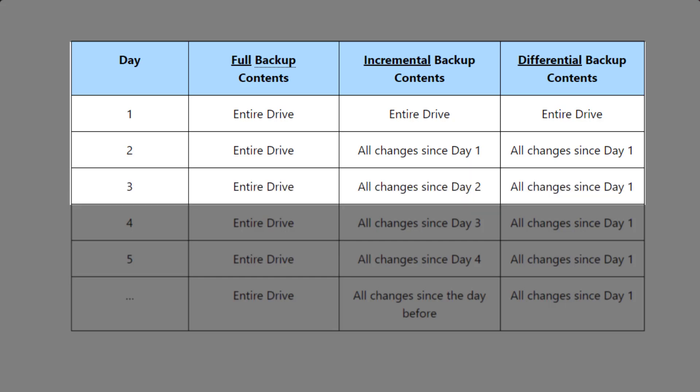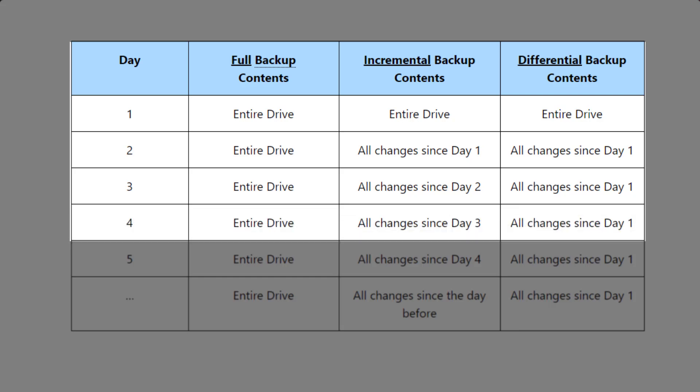Day three is where things start to get interesting. A full backup is always a backup of the entire drive. An incremental backup would contain only those things that have changed since the previous day — since day two. A differential backup will contain everything that changed since that first full backup; it doesn't matter what happened on day two. On day four, the entire drive gets backed up for a full backup because a full backup is always the whole thing. An incremental backup will back up only those things that have changed in the last day, since day three. The differential backup similarly includes all changes since day one — it doesn't matter that there were previous differential backups. As long as there's a starting point, that's what a differential backup is going to include.